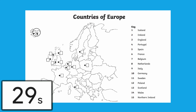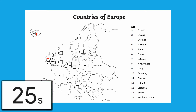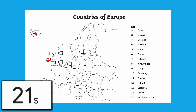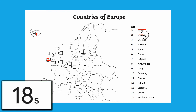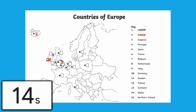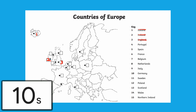Another way of using it as an assessment tool is to time children to see how long it takes them to locate the countries. They can compare their timing and the amount of countries they can locate from the beginning of the topic and then at the end. That way children can see their progress themselves.